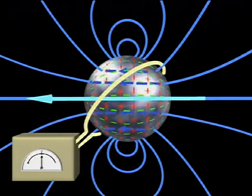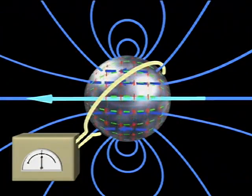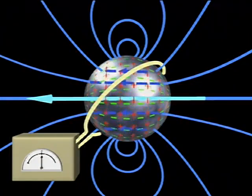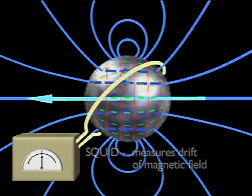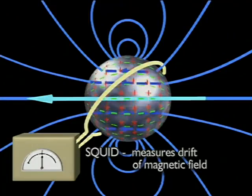To measure a change in a gyroscope spin direction or tilt, the gyroscope is encircled with a loop connected to a magnetometer known as a SQUID, or superconducting quantum interference device.